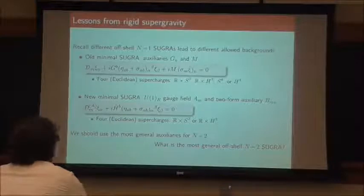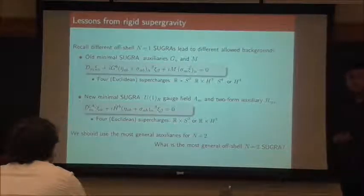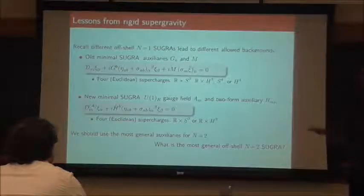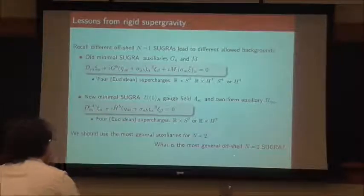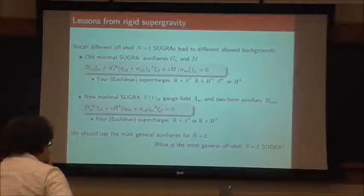Our motivation, since we were aware of this, was to try to be really agnostic — to make the most general choice possible and find the most general set of auxiliary fields one could have for N=2. In other words, what is the most general off-shell N=2 Poincaré supergravity?